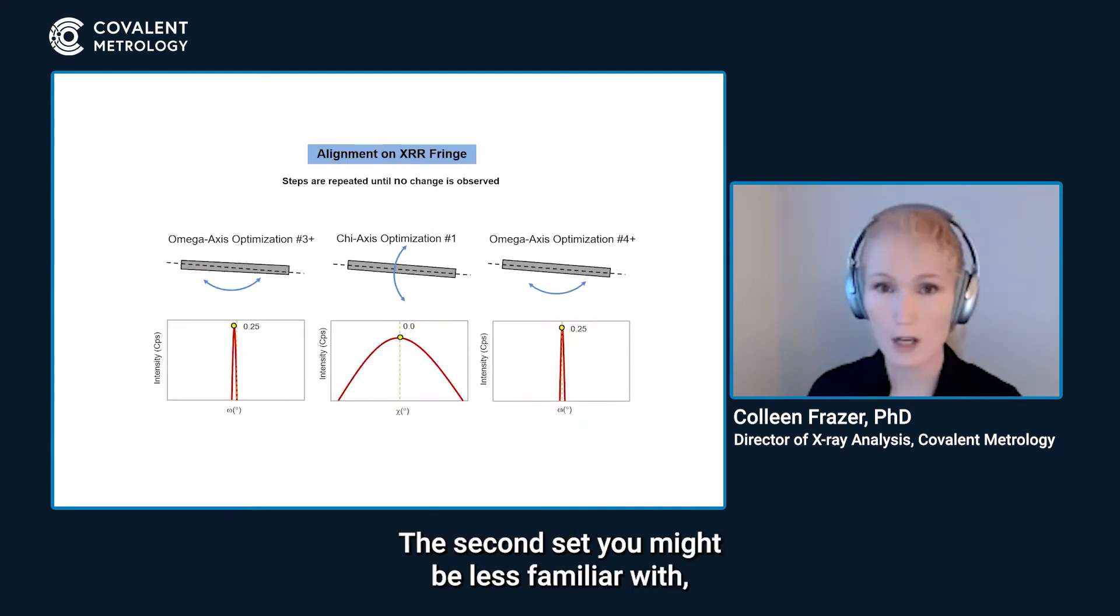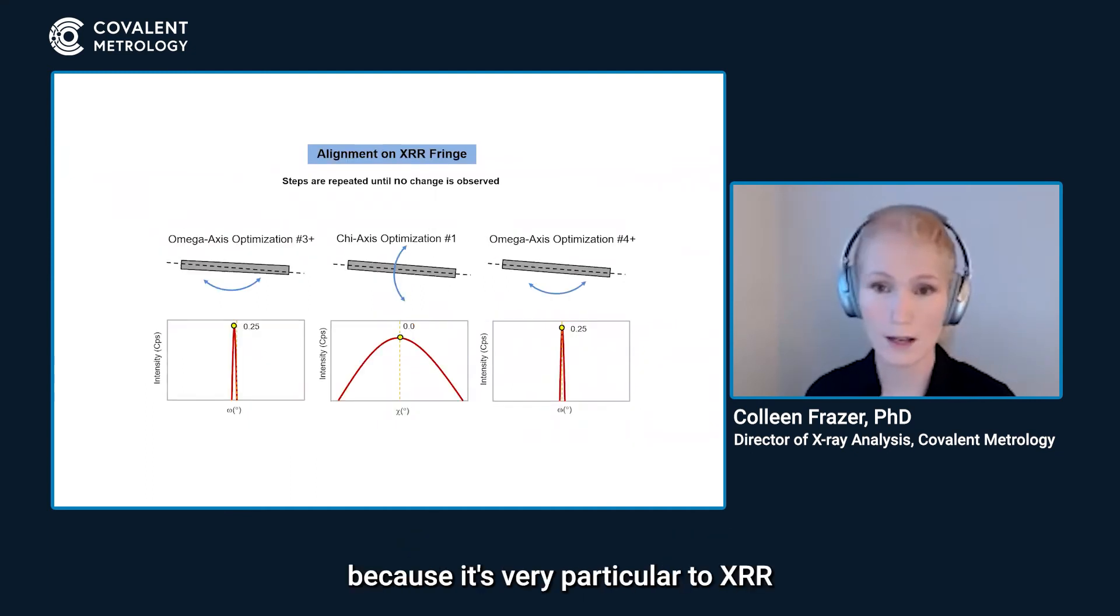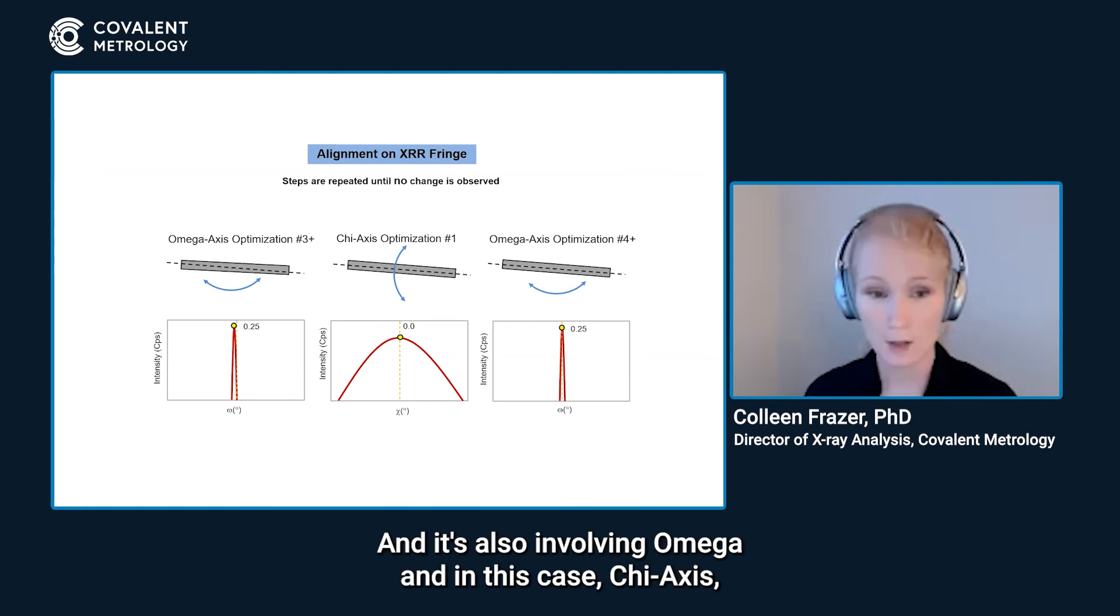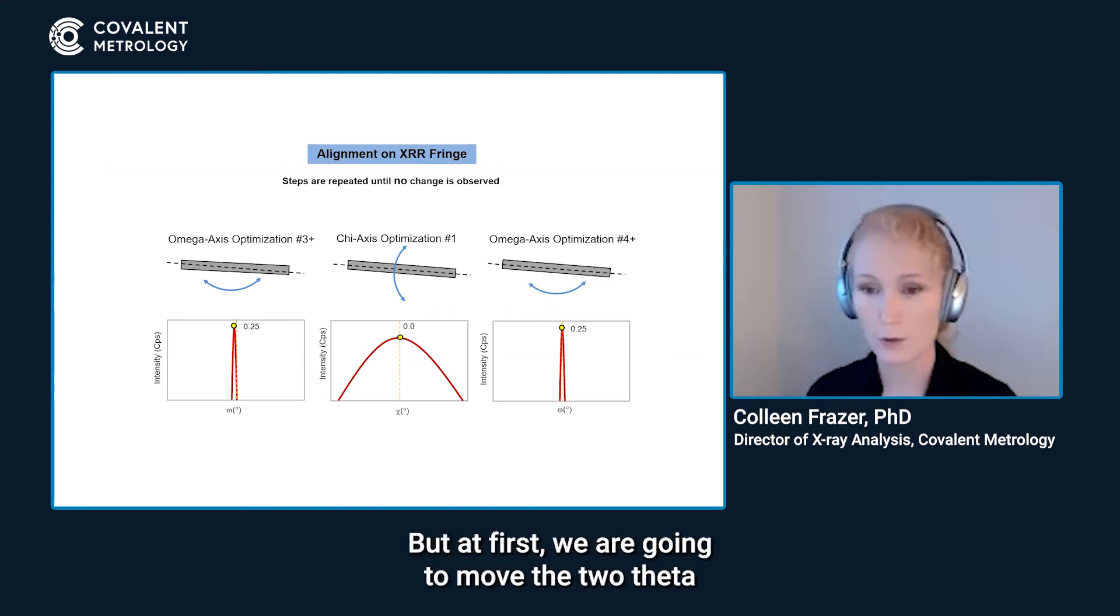The second set you might be less familiar with because it's very particular to XRR and sometimes grazing incidence and that is aligning on a fringe or at least where the fringe intensity would be. You don't necessarily need to know there would be a fringe specifically there. These steps are also repeated until no change is observed and it's also involving omega and this chi axis which is perpendicular to different axis. But at first we are going to move the two theta and omega axes to non-zero values.